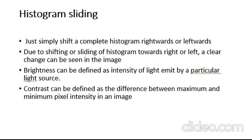In histogram sliding we just simply shift a complete histogram toward the left side or right side. Due to shifting or sliding the histogram, a clear change can be seen in the image. In this video we are going to use histogram sliding for manipulating the brightness.